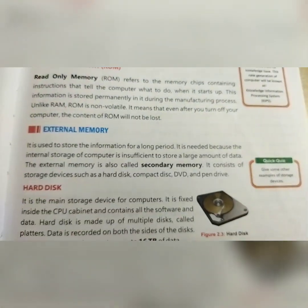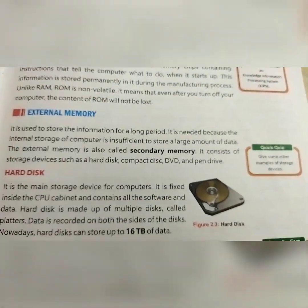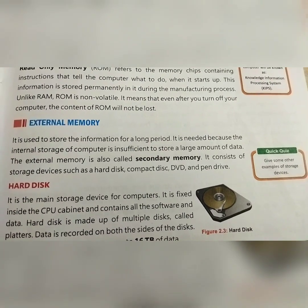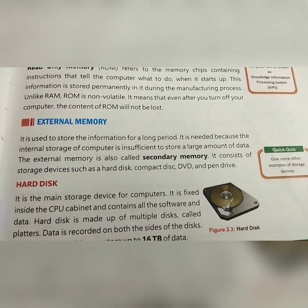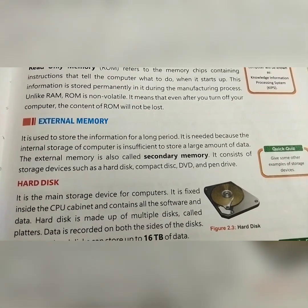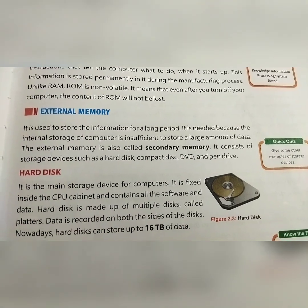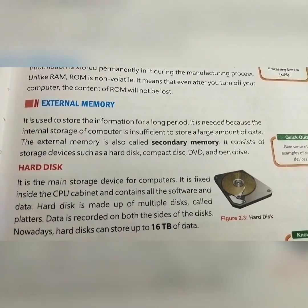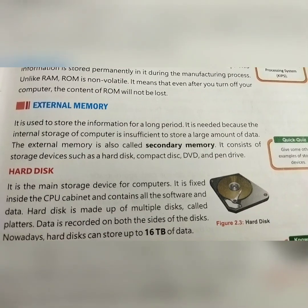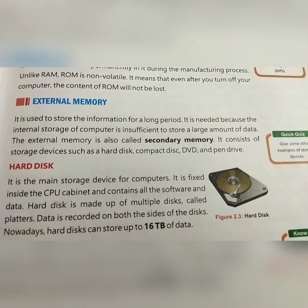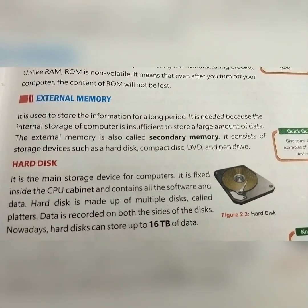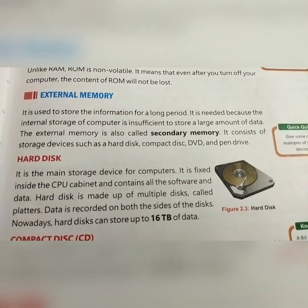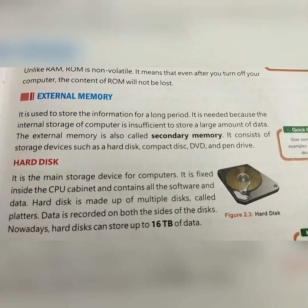Now coming to External Memory. External memory stores information for a long period. It is needed because the internal storage of a computer is insufficient to store large amounts of data. External memory is also called secondary memory, and it consists of storage devices such as Hard Disk, Compact Disk, DVD, and Pen Drive.